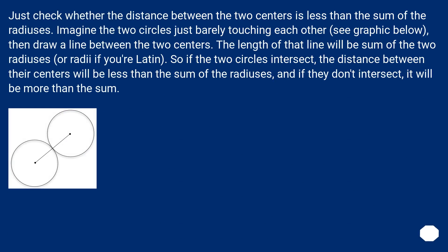Just check whether the distance between the two centers is less than the sum of the radiuses. Imagine the two circles just barely touching each other — see the graphic below — then draw a line between the two centers. The length of that line will be the sum of the two radiuses, or radii if you're Latin.